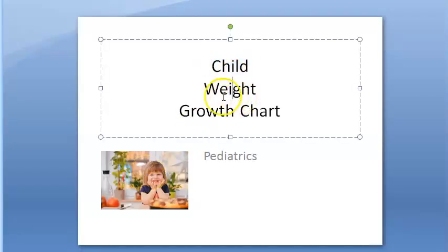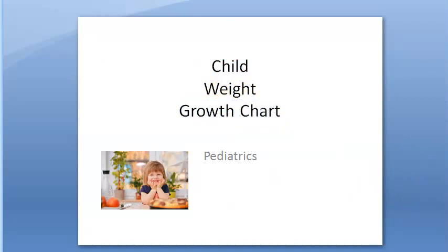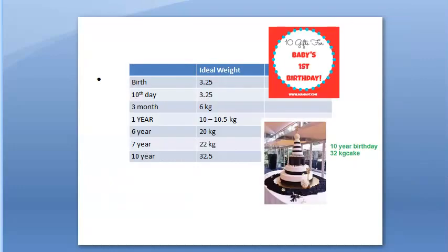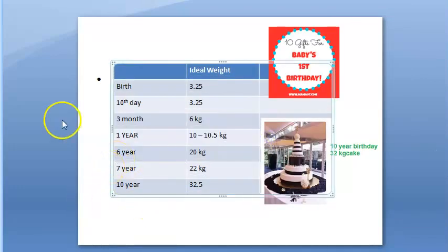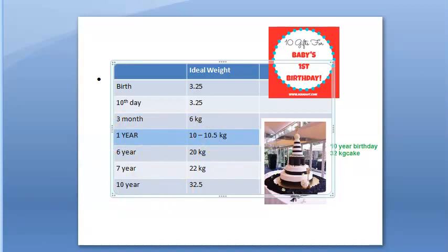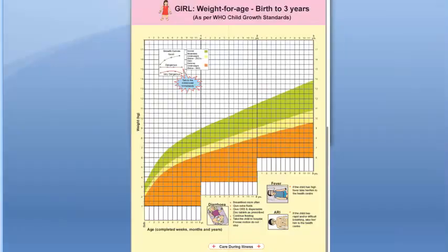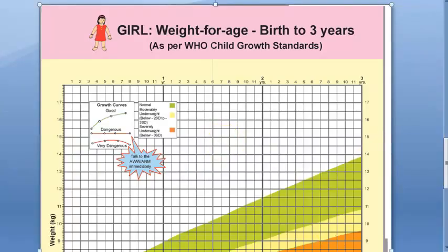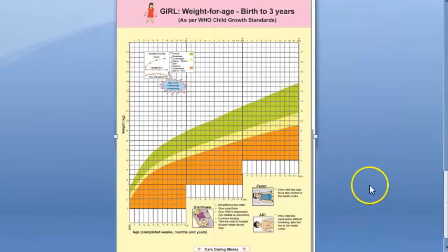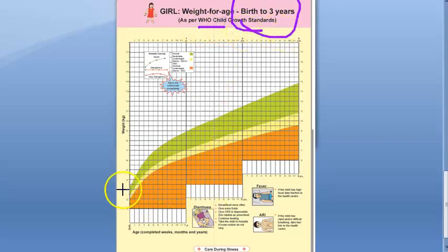In this video, let us look at child weight growth. This is similar for boy and girl — not much difference. The ideal weight chart shows around 10 kgs at the first year. This is the standard growth chart that comes with the mother and child protection card, covering birth to 3 years as per WHO child growth standards. They plot weight here.